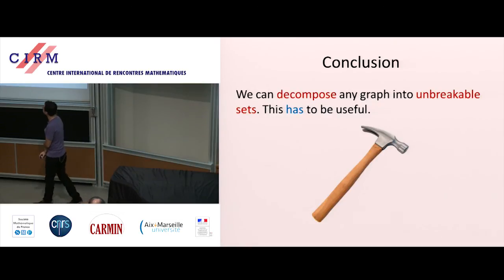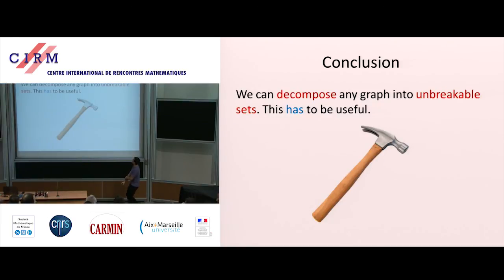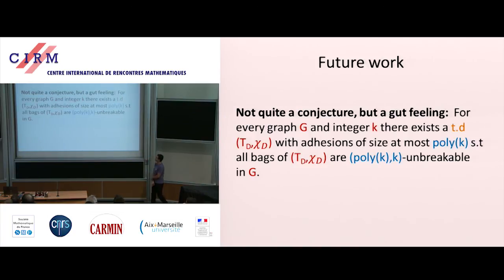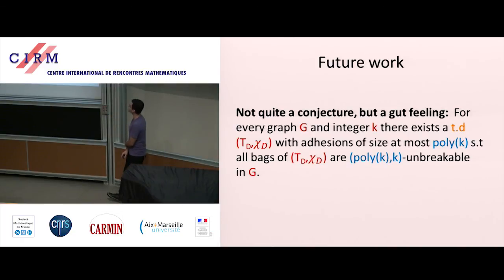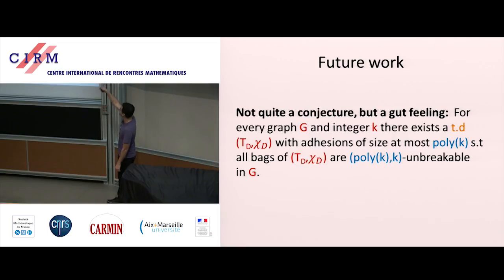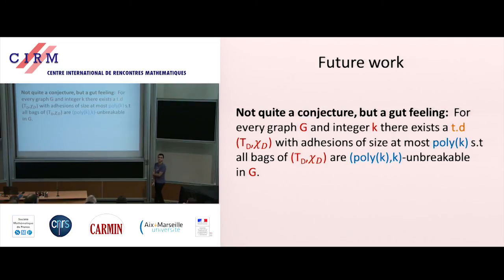To conclude: we can decompose any graph into unbreakable sets, and we have one application — minimum bisection is FPT. This cannot be the only application; my feeling is that we have a giant hammer and we're looking for nails. A gut feeling, not quite a conjecture: the parameters for unbreakability and adhesion size shouldn't be 2^K, it should be poly(K), especially given that the excluded grid theorem has been improved to polynomial. Solving this would be very nice. Thank you.